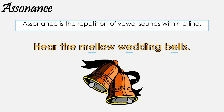Now assonance usually occurs within the word itself, which makes it quite difficult to spot. Also, each vowel — A, E, I, O, and U — can each be pronounced at least two different ways. So the E in 'here' isn't pronounced in the same way as the E in 'mellow,' 'wedding,' and 'bells.'